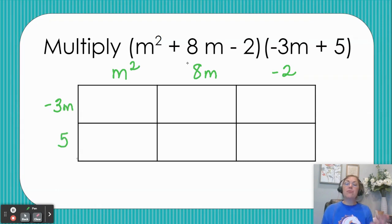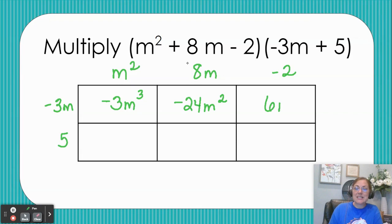Now when you fill your box, you fill it by multiplying. So negative 3m times m to the second gives me negative 3m to the third. Negative 3m times 8m gives me negative 24m to the second. Negative 3m times negative 2 gives me 6m.